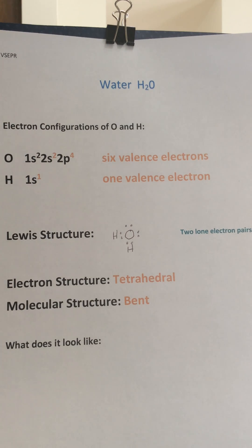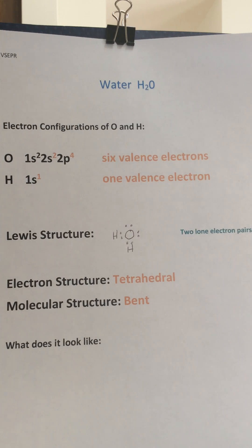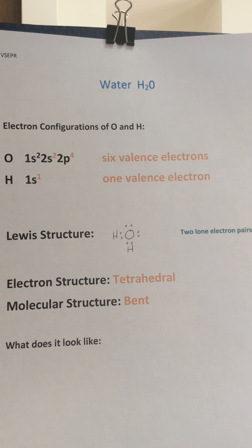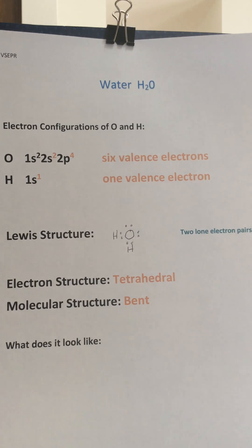Valence shell electron pair repulsion. The third molecule we're going to look at is water, H₂O. And just like we did with methane and ammonia, we're going to start out by looking at the electronic configuration, really so we can get the number of valence electron shells and create the Lewis structure.